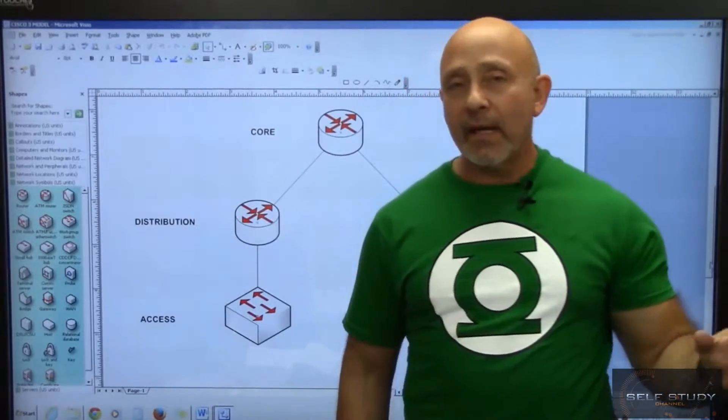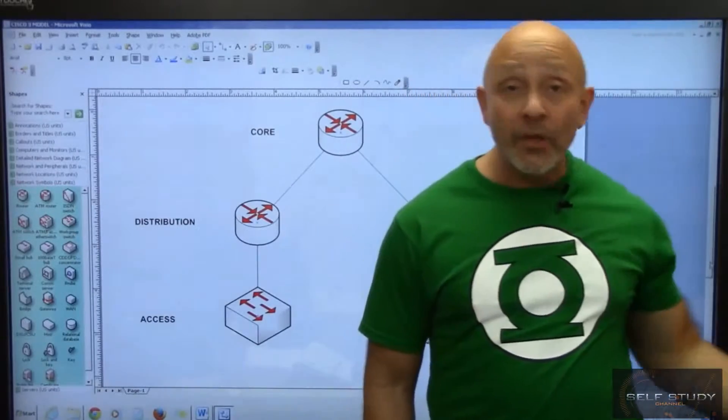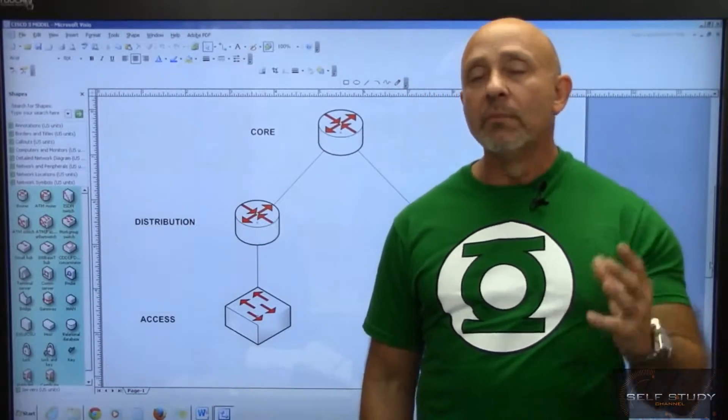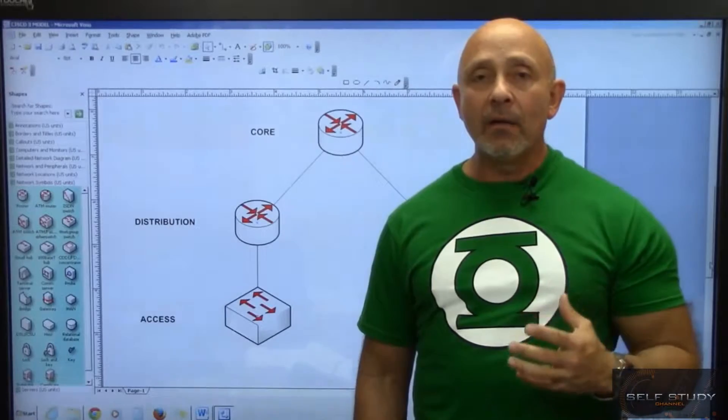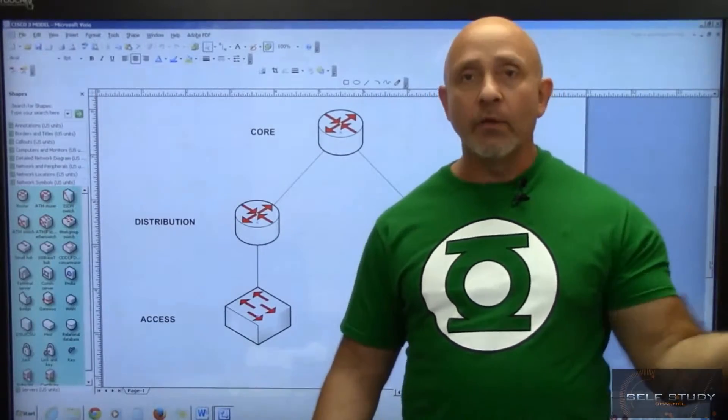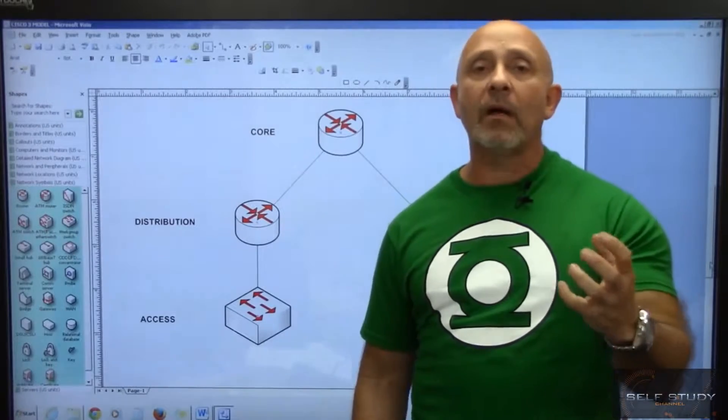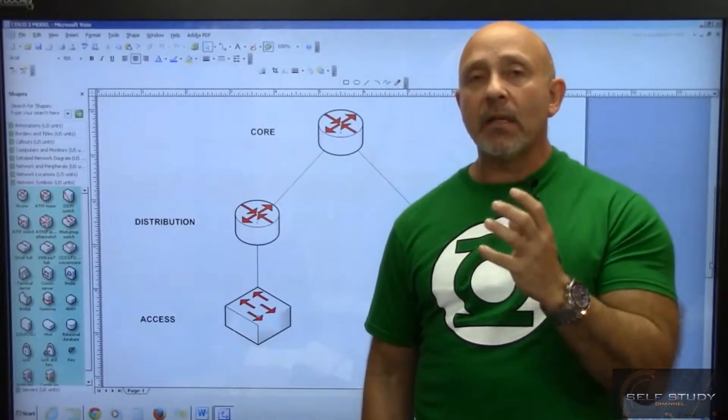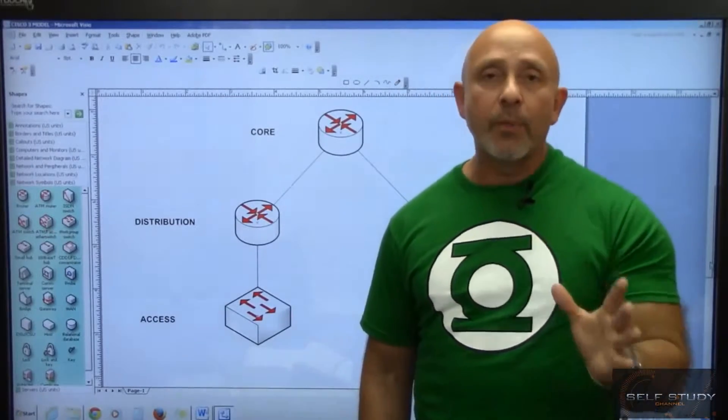You want to minimize the amount of things going on. You don't want intra-VLAN connectivity in your core router. Your core router has to be the one with the least amount of work—its main purpose is to pass information across.